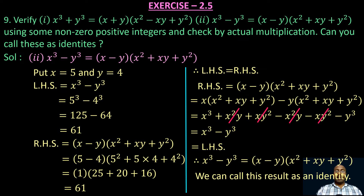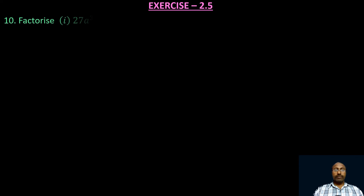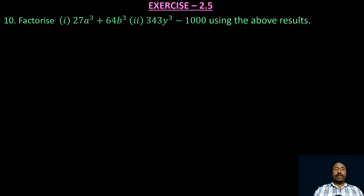Let us go to the 10th problem: Factorize (1) 27a³ + 64b³ and (2) 343y³ - 1000, using the above results. The above results are those proven in the 9th problem: x³ + y³ = (x + y)(x² - xy + y²) and x³ - y³ = (x - y)(x² + xy + y²). Using these two results, we have to factorize these two expressions.